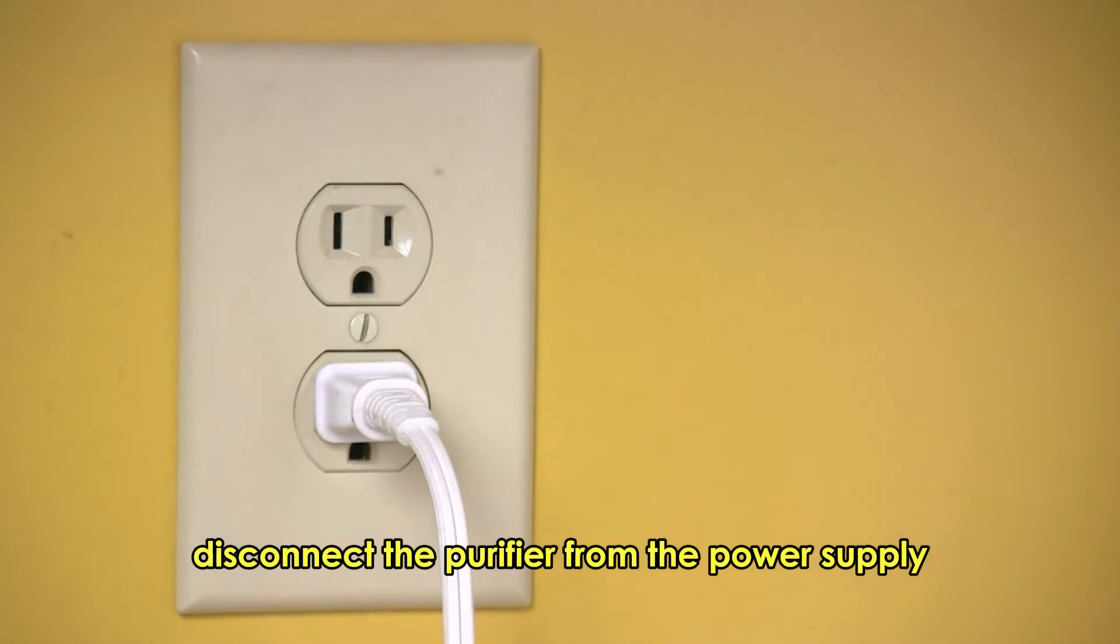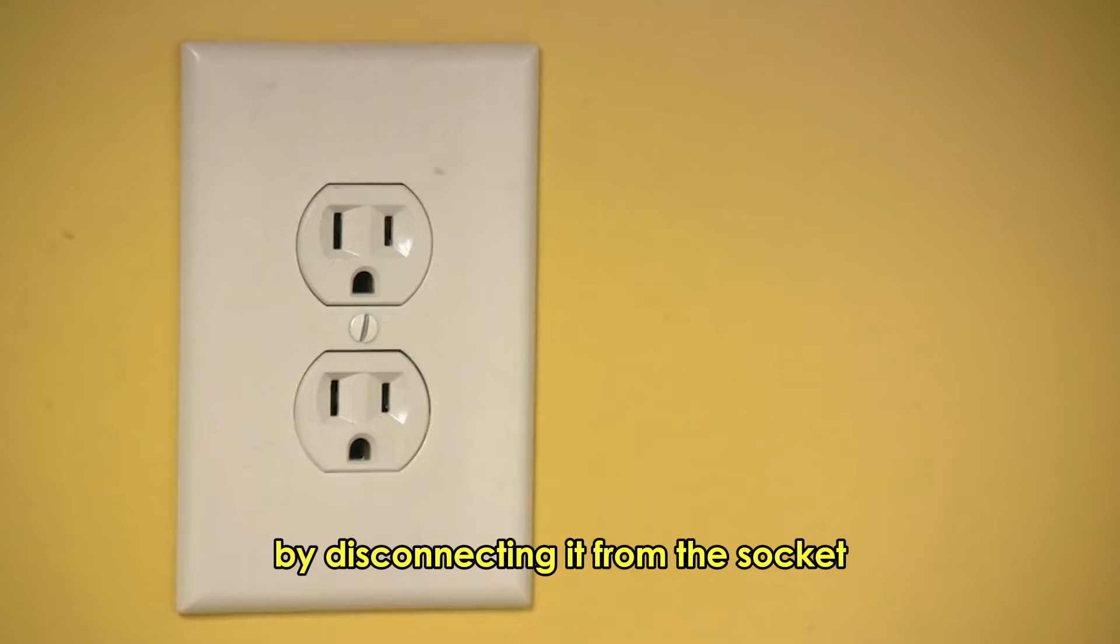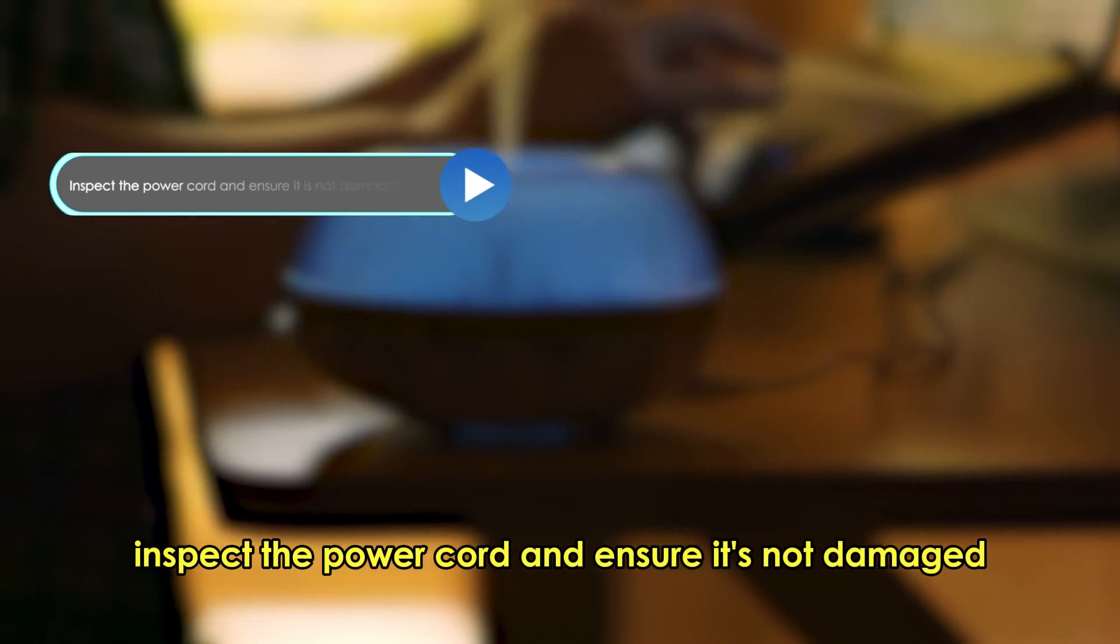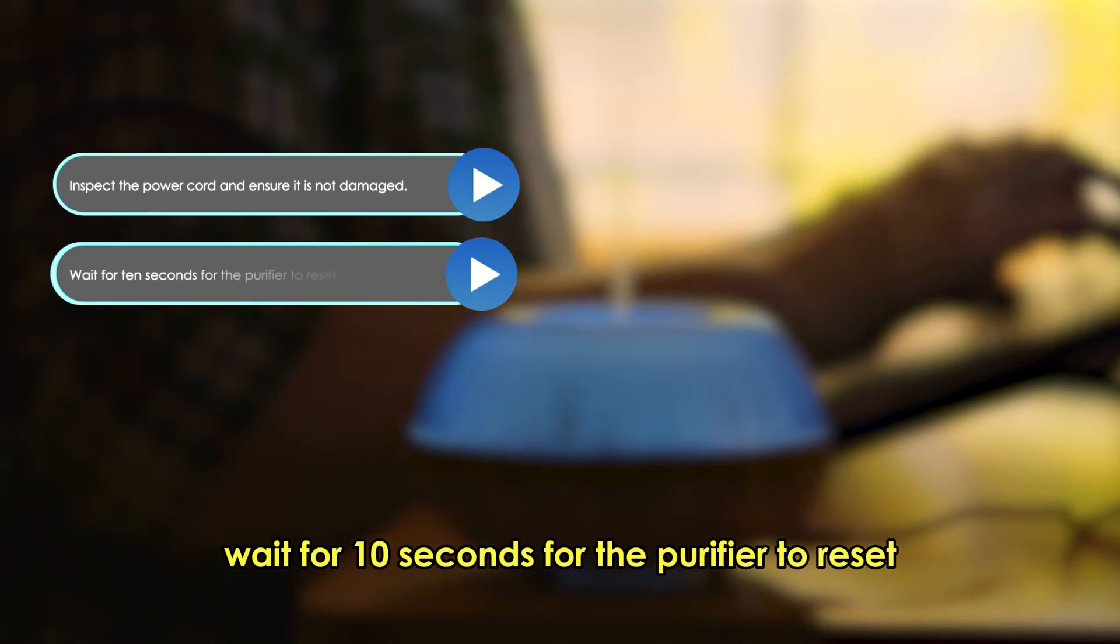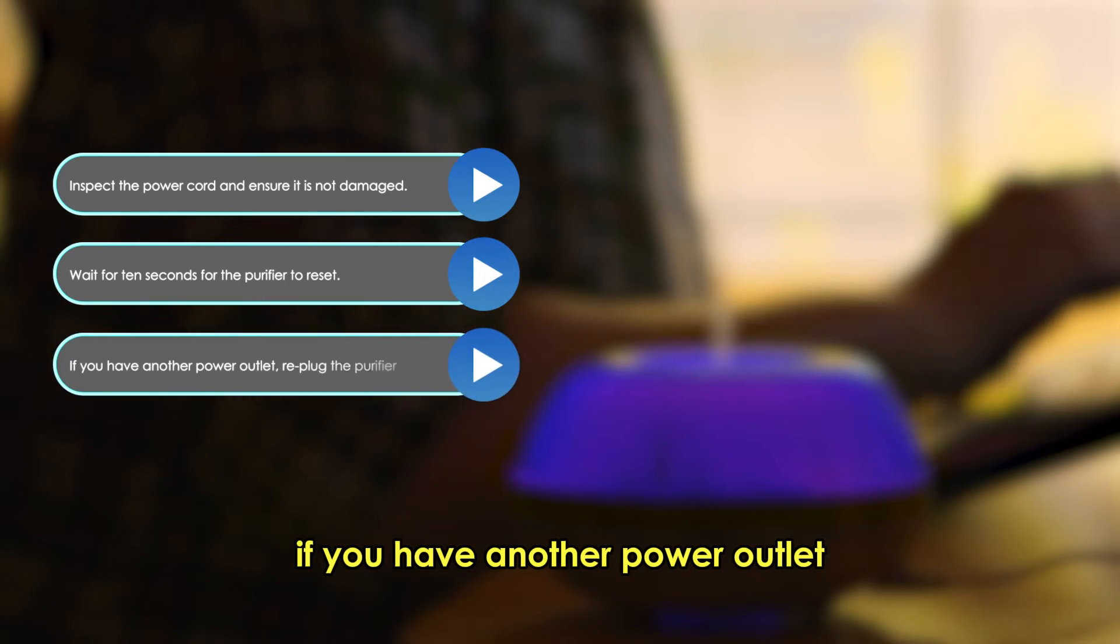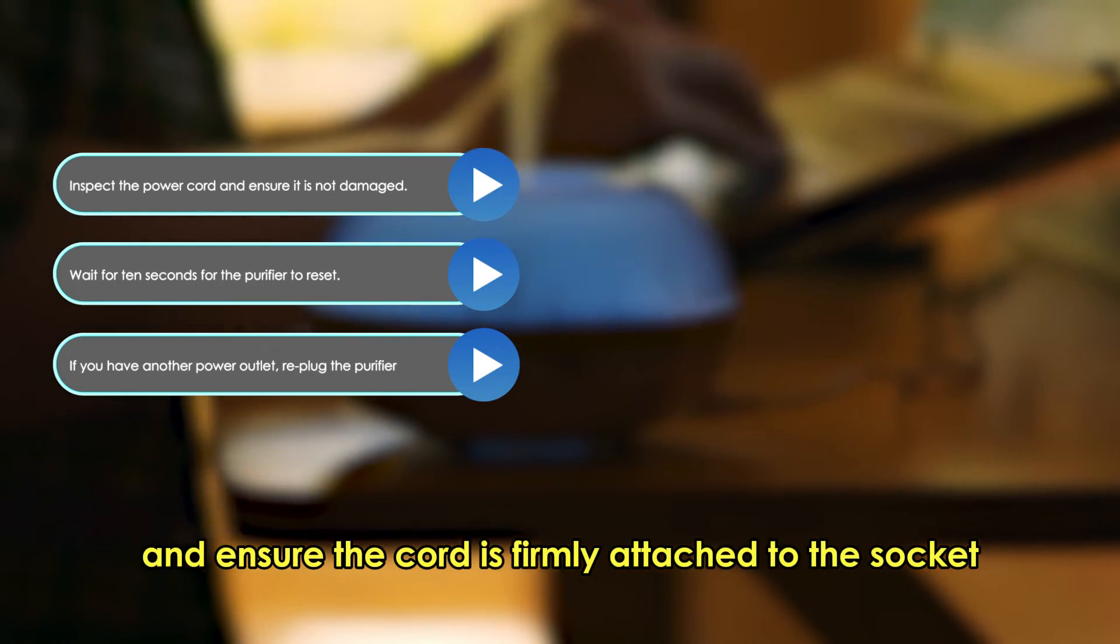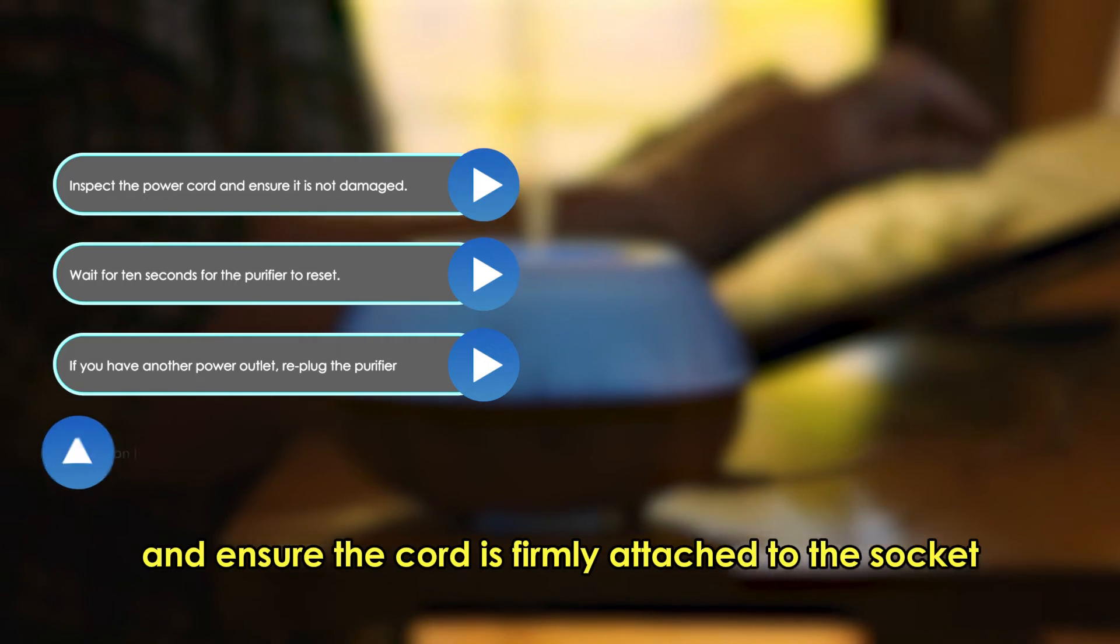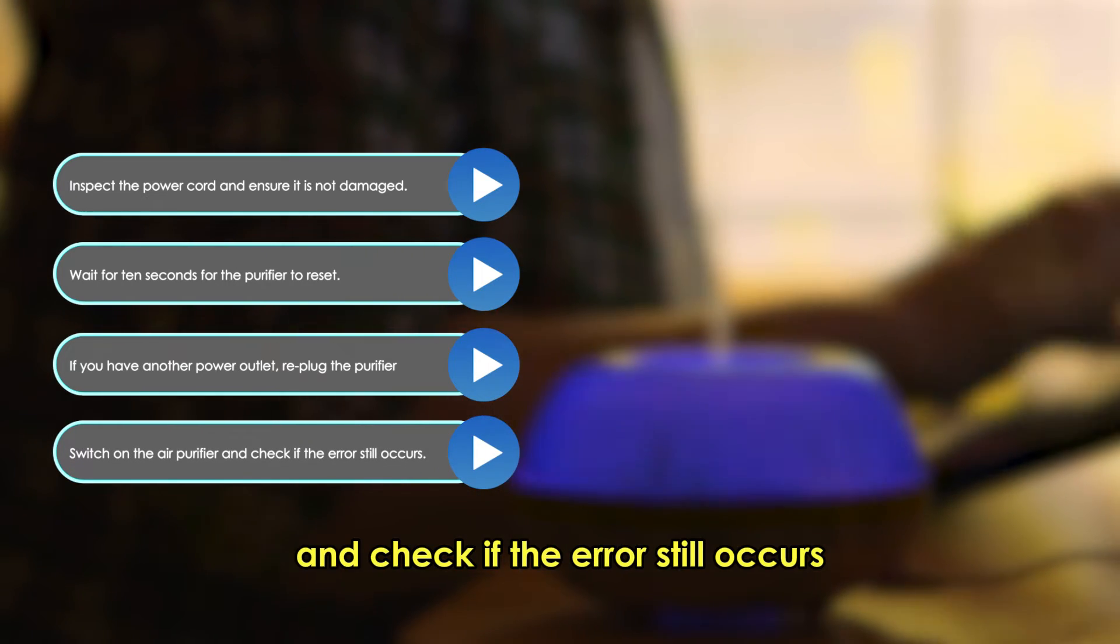Inspect the power outlet. Disconnect the purifier from the power supply by disconnecting it from the socket. Inspect the power cord and ensure it's not damaged. Wait for 10 seconds for the purifier to reset. If you have another power outlet, re-plug the purifier and ensure the cord is firmly attached to the socket. Switch on the air purifier and check if the error still occurs.